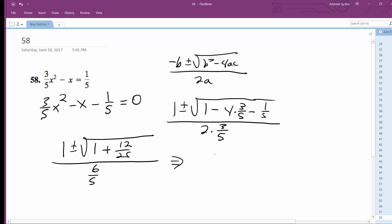Alright, so moving this over, this is 1 plus or minus square root of 25 plus 12 which is 37 over 25, over 6 over 5. So this ends up being 1 plus or minus square root of 37 over 5, and then all this times 5 over 6 because you're just flipping it on the outside.